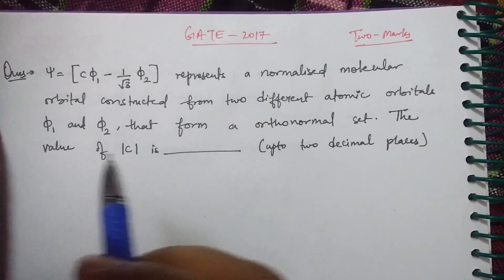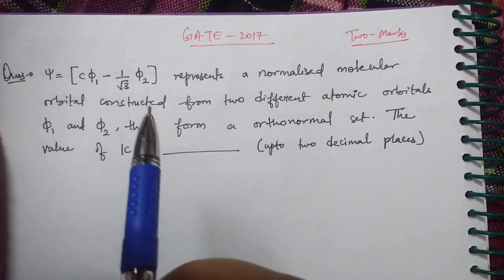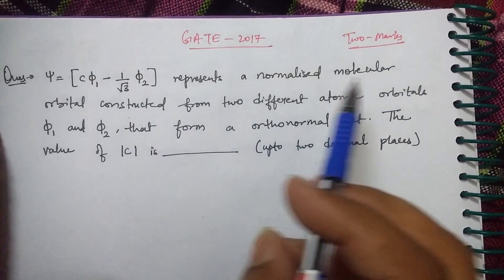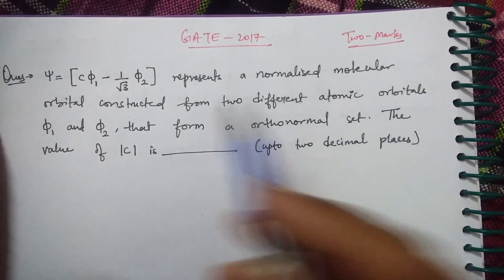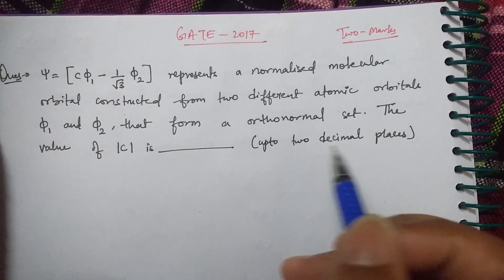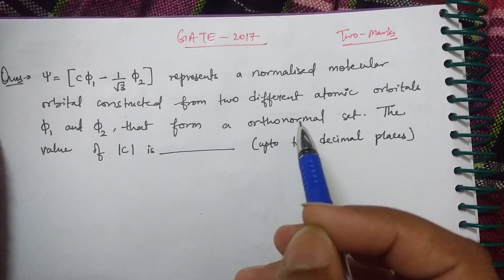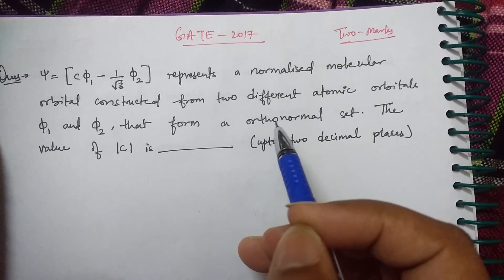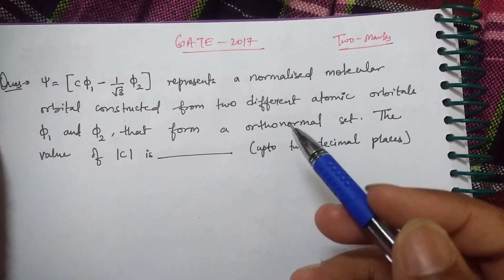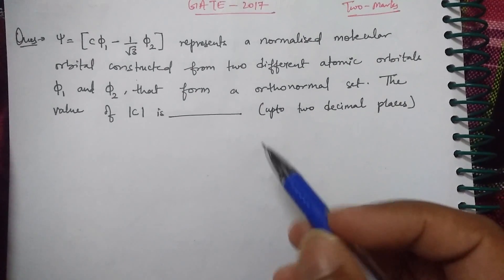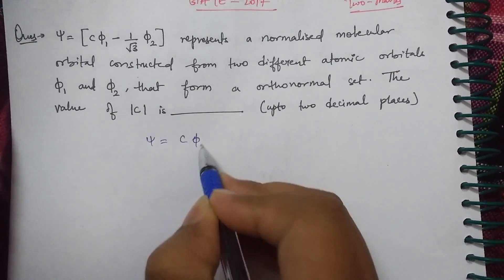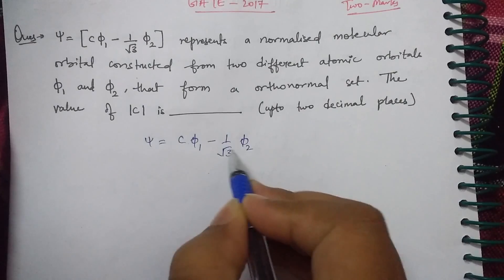The third question was a numerical question for two marks — purely quantum. The question states that ψ = c·φ₁ − (1/√3)·φ₂ represents a normalized molecular orbital constructed from two different atomic orbitals φ₁ and φ₂ that form an orthonormal set. The value of |c| is to be found up to two decimal places. The given wave function is ψ = c·φ₁ − (1/√3)·φ₂.